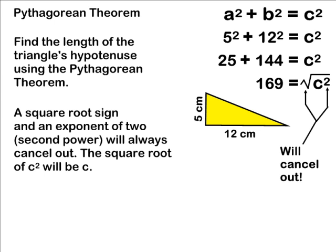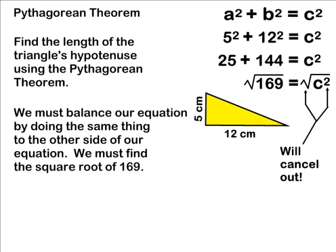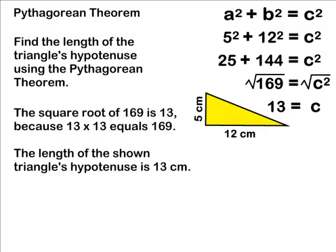However, you must remember what you do to one side of any equation, you must balance out your equation by doing it to the other side as well. So we must figure out what the square root of 169 is. And the only thing that we can multiply by itself to produce 169 is 13.